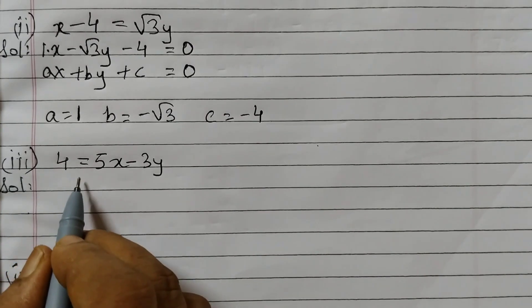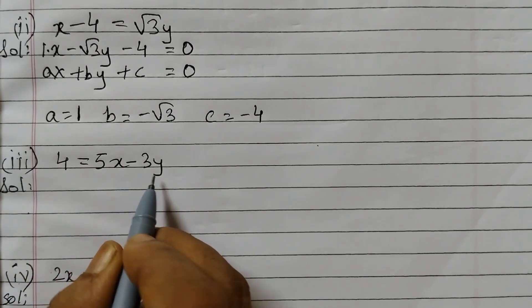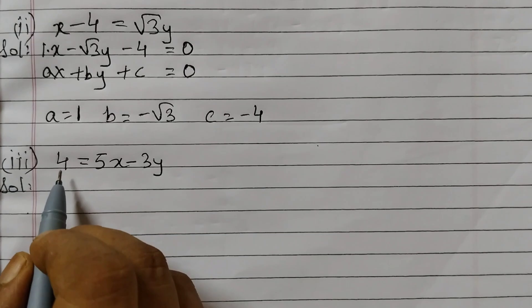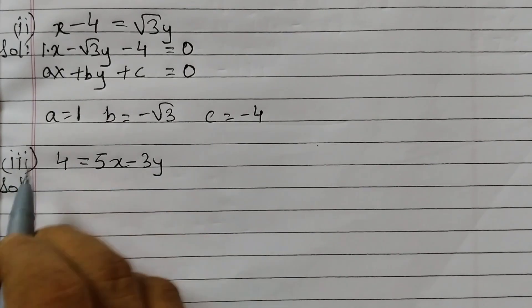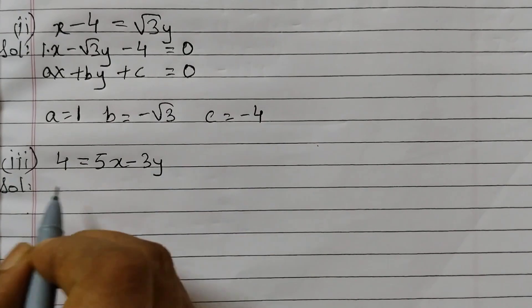Third one, 4 is equal to 5x minus 3y. So there are two ways you can do this. Either you can get 4 to this side or you can get these two terms to the left hand side. So I will take 4 to the other side.